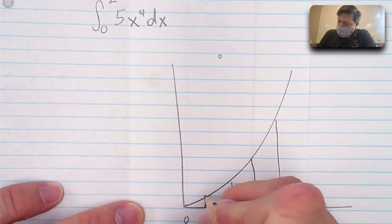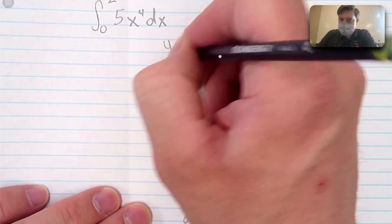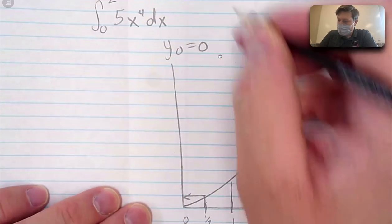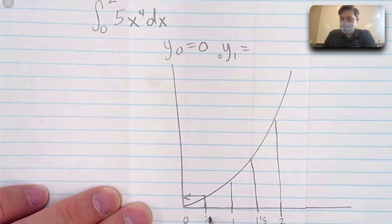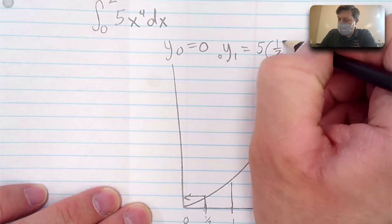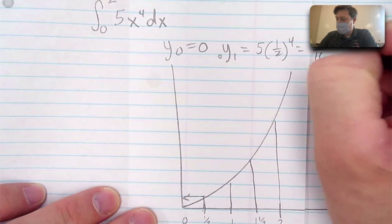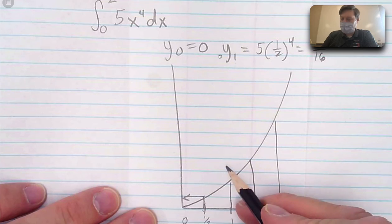So then the y value that matches y sub 0 equals 0. Y sub 1 equals 5 times 1 half to the 4th power. 5 times 1 half to the 4th power. Which, what is that? 16? 5 over 16?